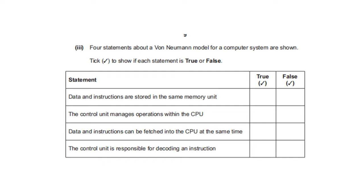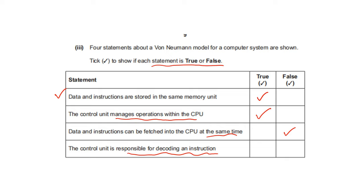Four statements about the von Neumann model for a computer system are shown. Tick to show if each statement is true or false. Data and instructions are stored in the same memory unit — true. Control unit manages the operation within the CPU — true, the control unit manages everything inside the CPU. Data and instructions can be fetched into the CPU at the same time — false. The control unit is responsible for decoding an instruction — true.